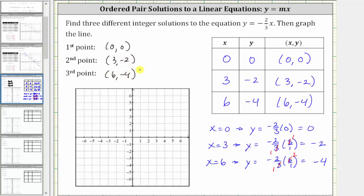And now we'll plot the points to sketch the line. Zero comma zero is the origin. For the ordered pair of three comma negative two from the origin, we move right three and down two. For the ordered pair six comma negative four from the origin, we move right six and down four. And now we sketch a line passing through the three points.